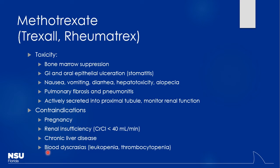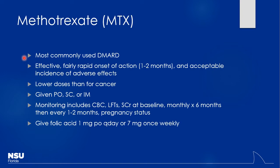Methotrexate is the most commonly used DMARD. It's fairly effective with a pretty good toxicity profile. Fast onset — about one to two months, which is nice. It can be given via several routes — some people use once-weekly IM administration, some people take it orally. For monitoring — serum creatinine, CBCs, LFTs — watch that monthly at first for the first six months or so, then you can start to space it out. Pregnancy status is also a concern.